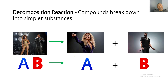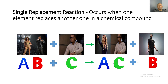In a decomposition reaction, compounds break down into simpler substances. I always like to tell my students this is kind of like a divorce or two people breaking up. So you have Beyoncé and Jay-Z married, and for whatever reason they get divorced — Beyoncé is on her own and Jay-Z is on his own. So AB yields A plus B.